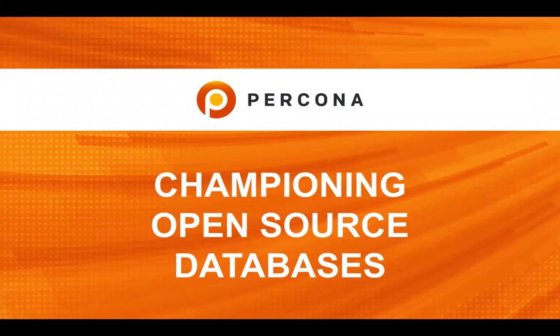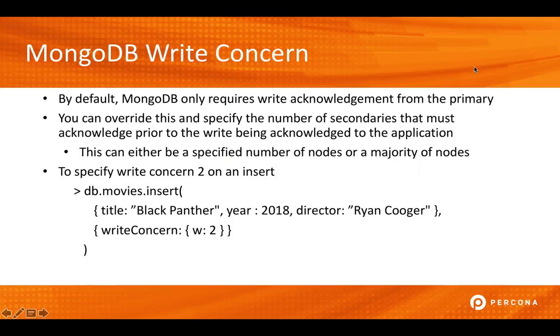Hi. Do you have questions about how MongoDB acknowledges write requests made to your primary and then how that write request is actually replicated out to the secondaries? I'm here to help. My name is Rick Golba and I'm a Product Marketing Manager here at Percona. MongoDB uses a process known as the write concern, and this allows Mongo to specify how the write request is acknowledged back to the application when it is received by the primary.